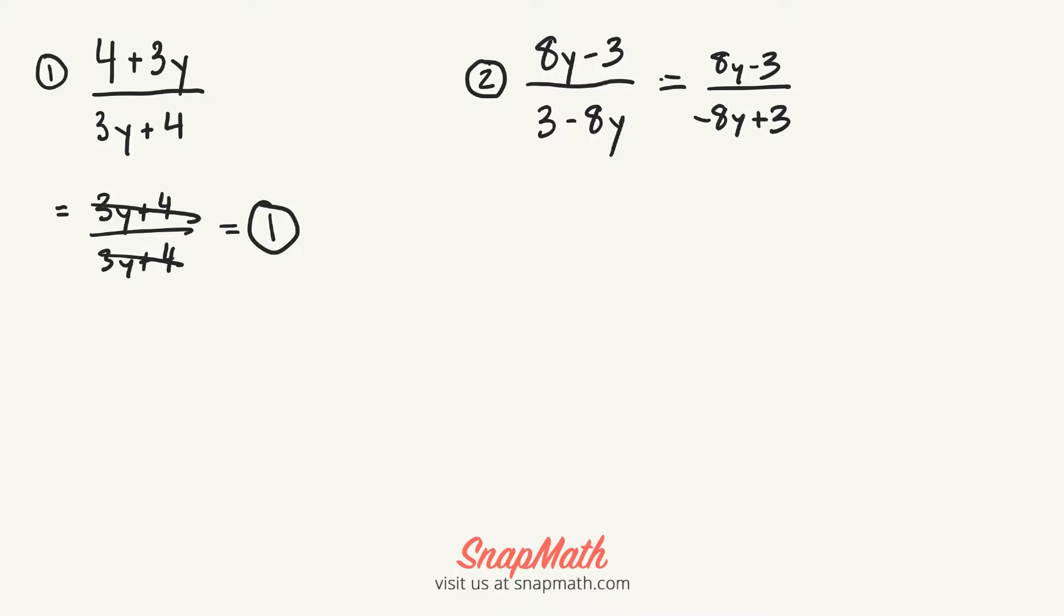So how that will look is we have 8y minus 3 on top and we take out a negative on the bottom and we'll be left with 8y minus 3.